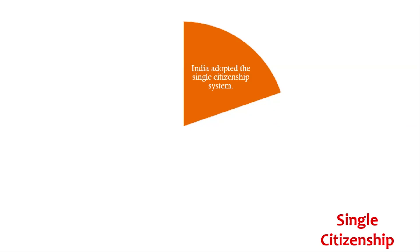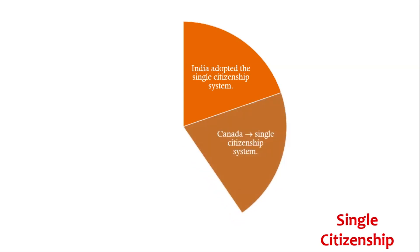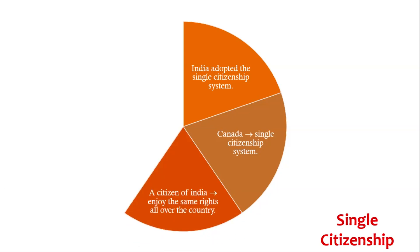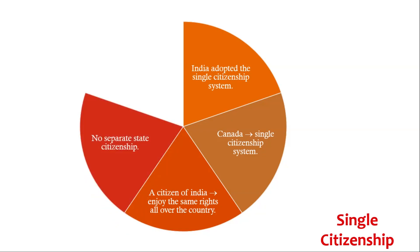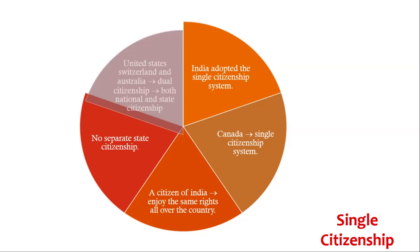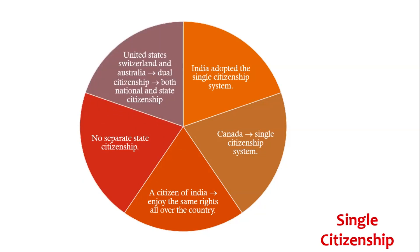Single Citizenship: Though India follows a dual polity of central and state government, the Constitution of India adopted the single citizenship system. Canada also follows a single citizenship system. A citizen of India, irrespective of the state in which he or she is born or resides, will enjoy the same rights all over the country. There is only Indian citizenship and no separate state citizenship, whereas federal governments like the United States, Switzerland, and Australia follow dual citizenship — both national and state citizenship.